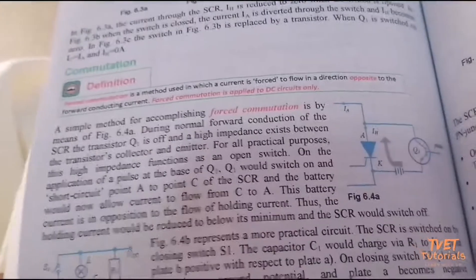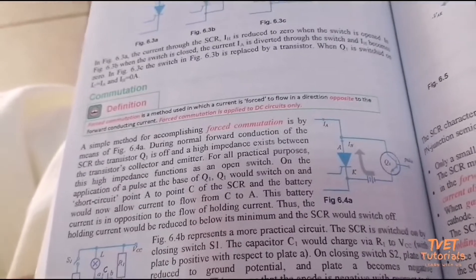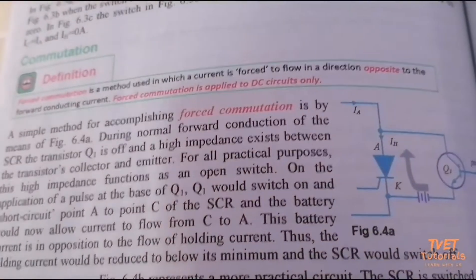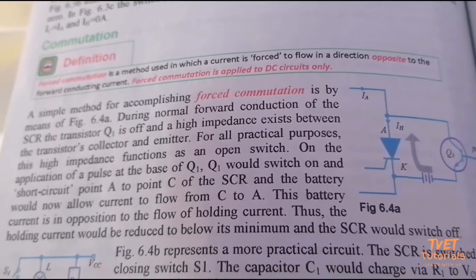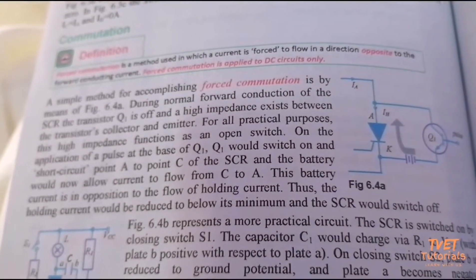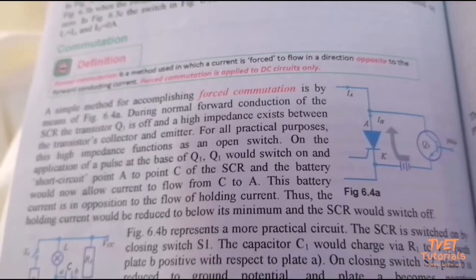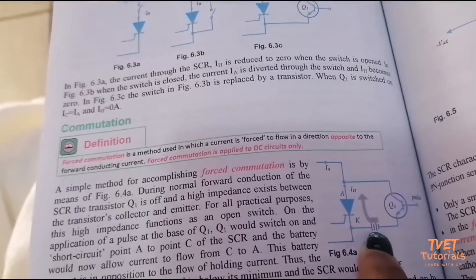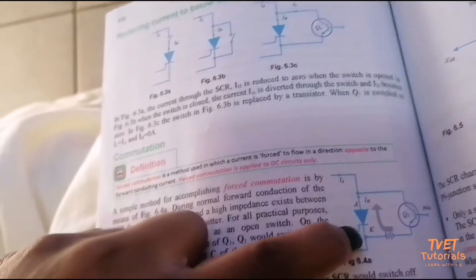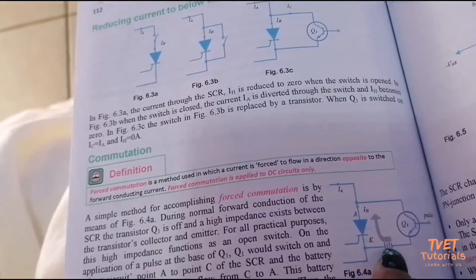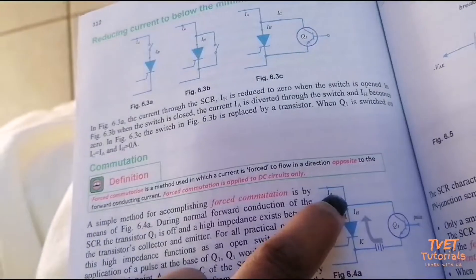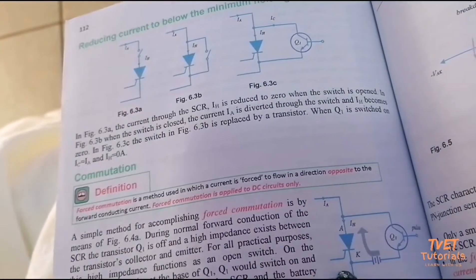For the commutation method, the SCR is turned off by applying a reversal battery to the SCR. When a reversal battery is applied — meaning positive is applied to the cathode (negative terminal) and negative is applied to the anode (positive terminal) — the circuit is going to be off.